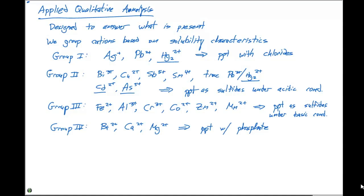Lastly, in group five, we have sodium+, potassium+, and NH4+. This is the soluble group. It's really tough to precipitate these ions out in solution, so we have to use something called a flame test. That will allow us to identify whether those three ions are present or absent.